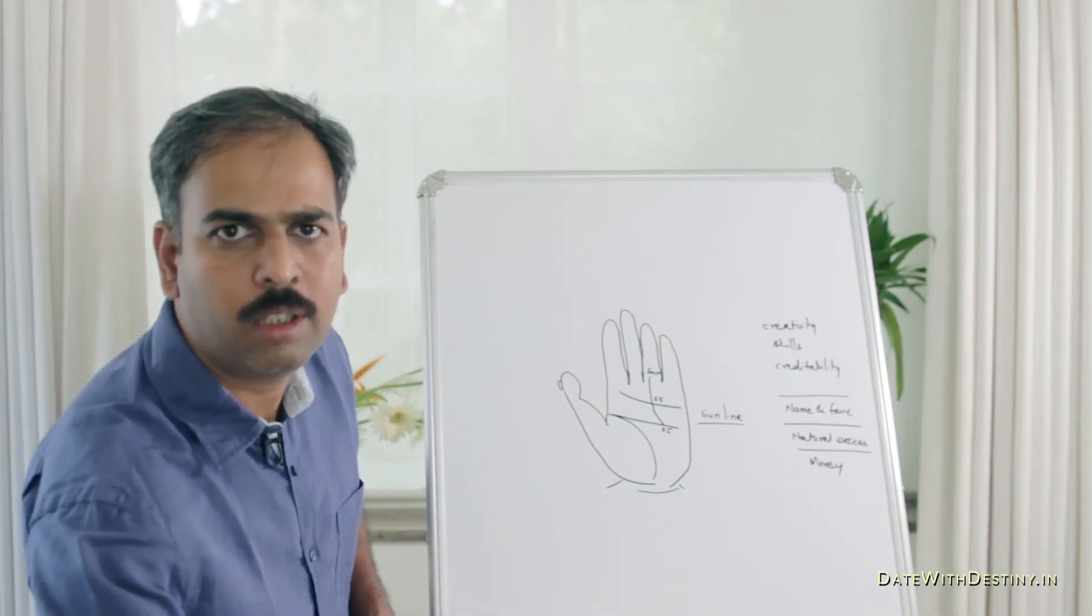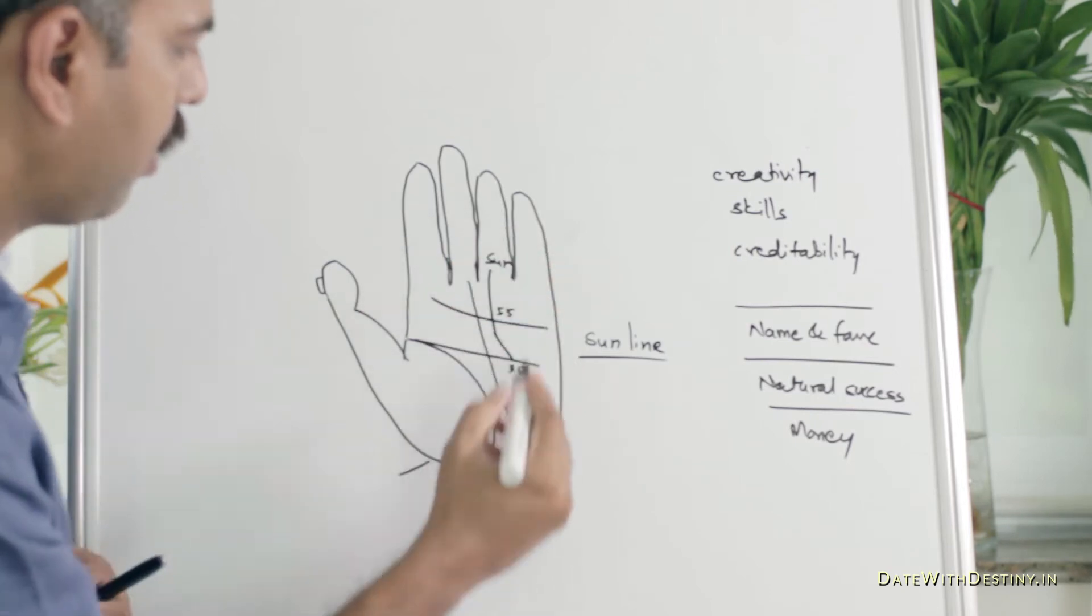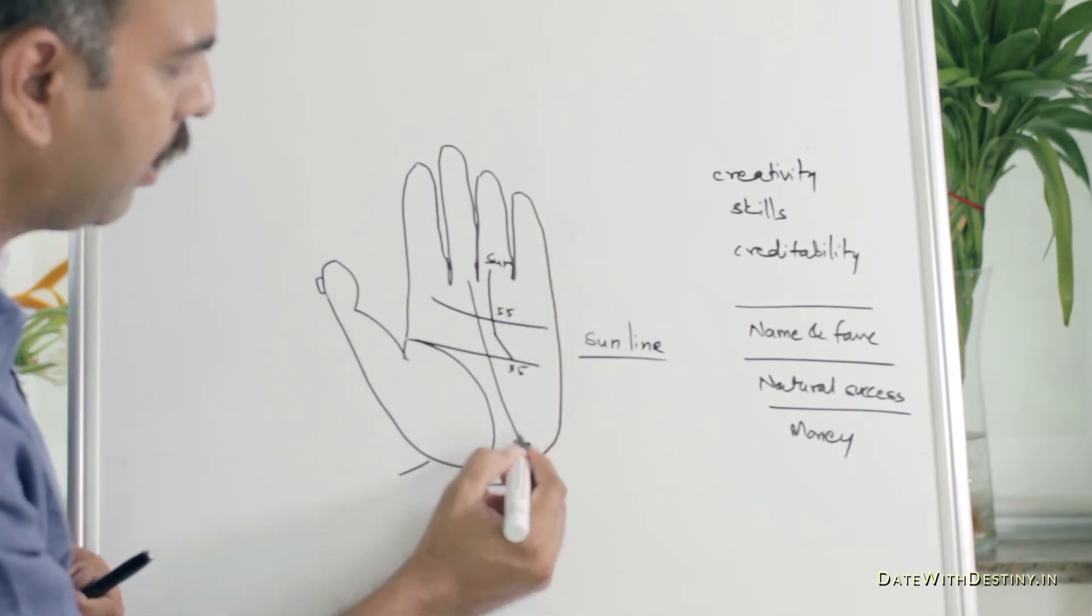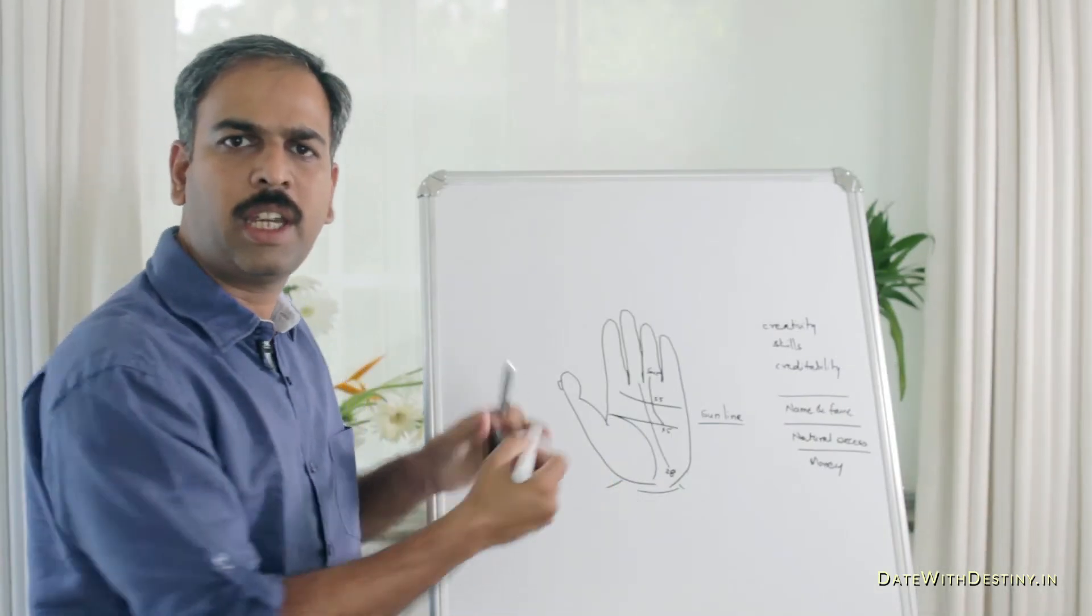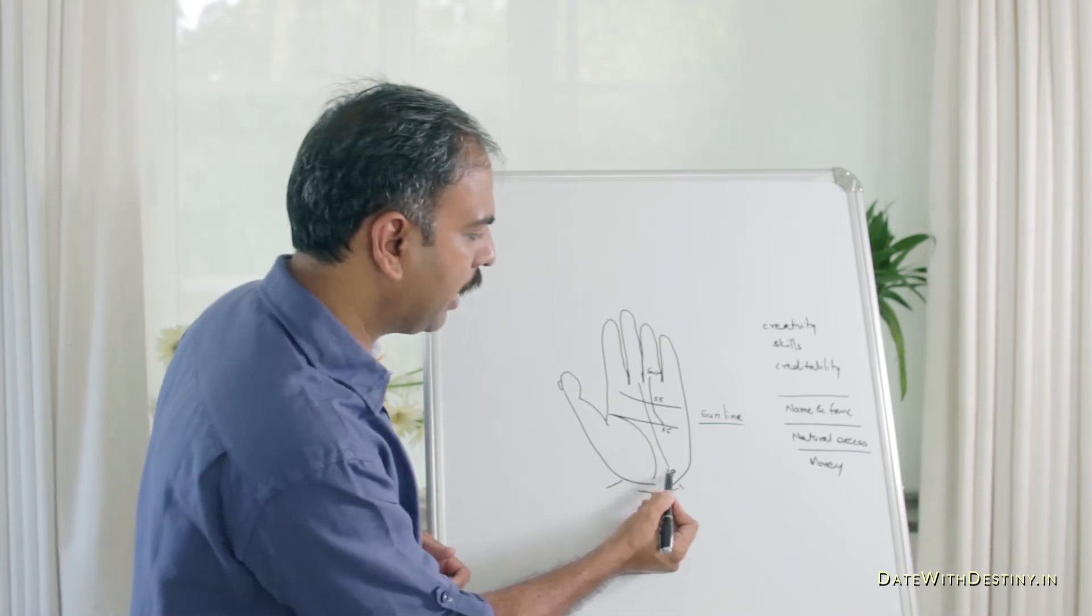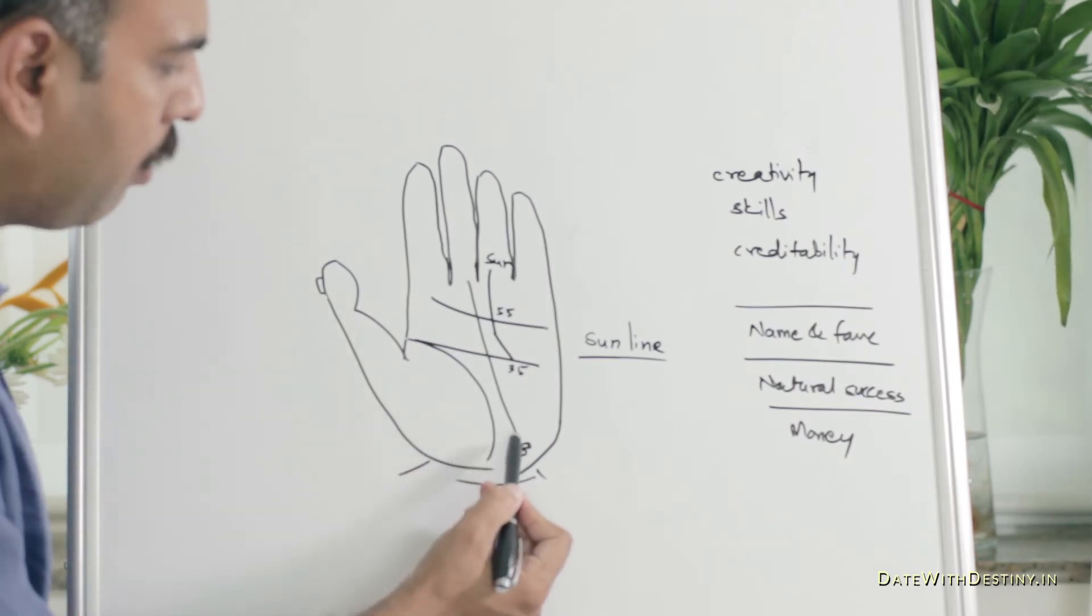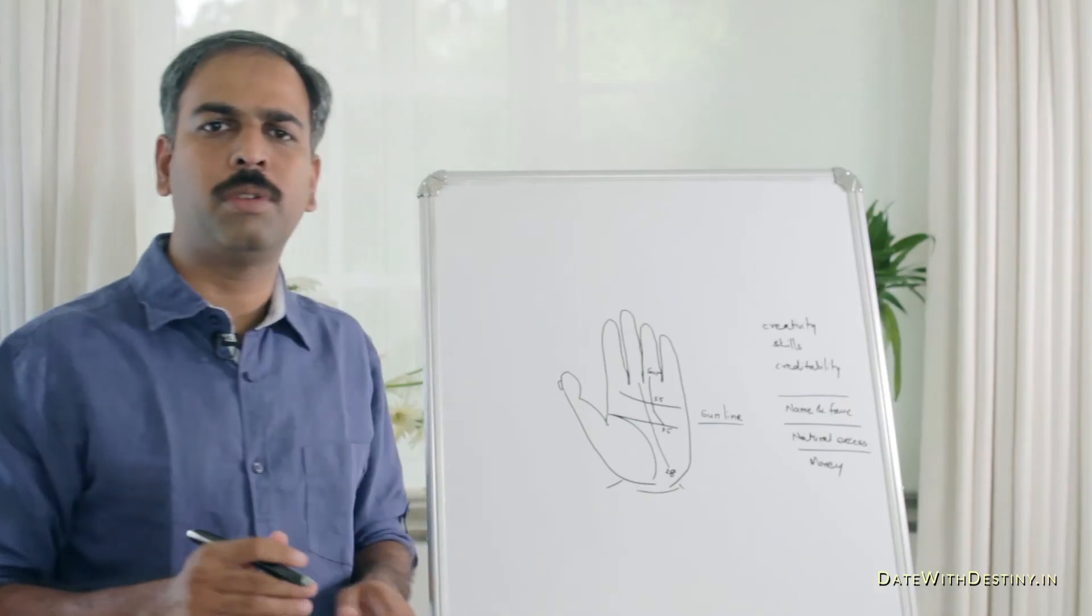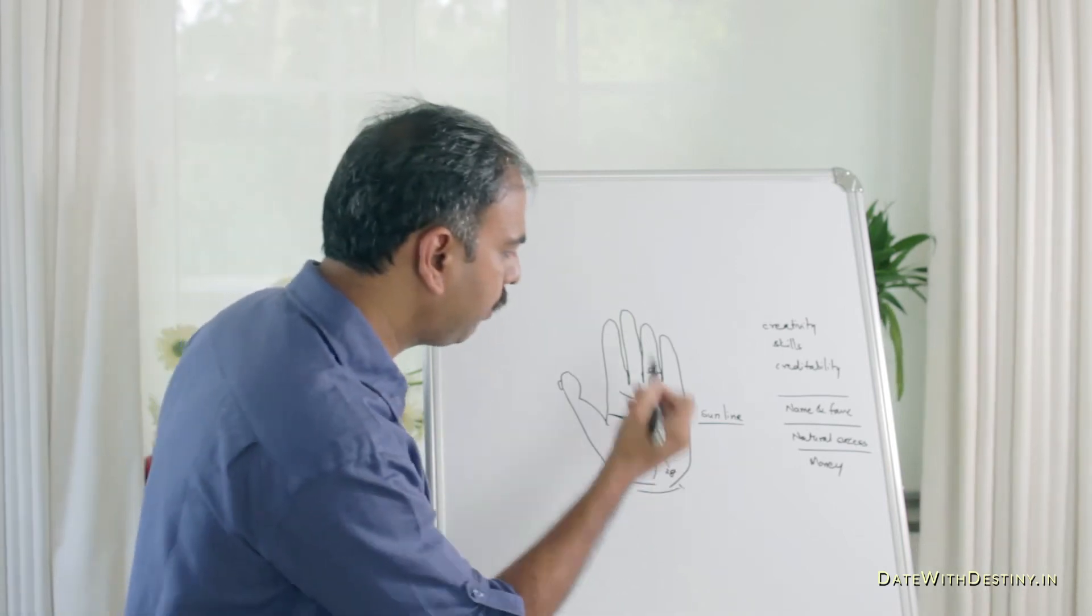For example, this is the Fate Line which starts from the age of 28. Suppose this is the hand of a doctor, and his Fate Line starts at the age of 28. He is working, giving treatment to other persons. But from 28 to 35, his treatment goes in a good condition. And at the age of 35,